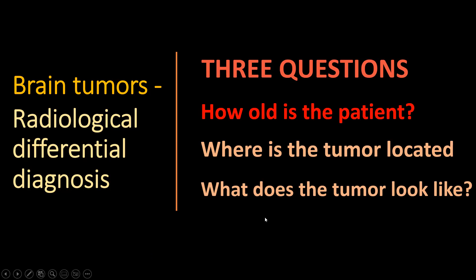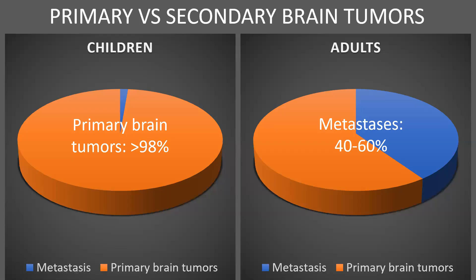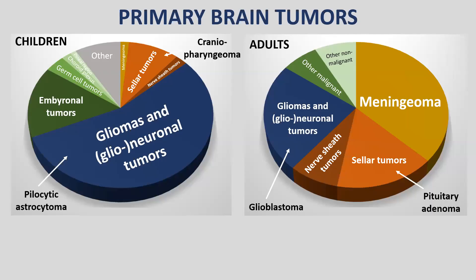The main distinction for patient age is between children and adults. In children, metastases are very rare — almost all brain tumours in children are primary. In adults, metastases constitute about 40 to 60 percent of brain tumours. So if you see a brain tumour in an adult, no matter where or what, you already have about a 50 percent chance it's a metastasis, and that number is higher in older adults.